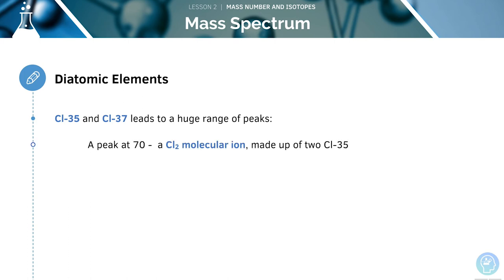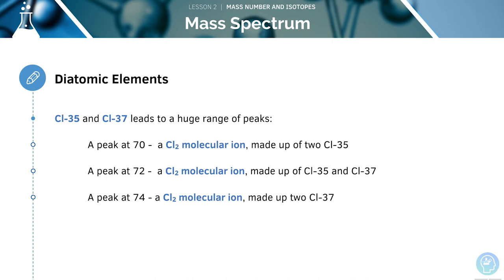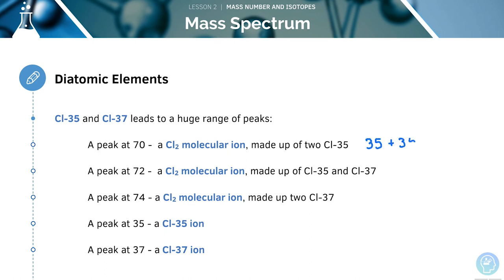Since chlorine has two isotopes, Cl-35 and Cl-37, this leads to a huge range of peaks. The peak at 70 is the chlorine molecular ion made up of two Cl-35s. The peak at 72 is made up of Cl-35 and Cl-37. The peak at 74 is made up of two Cl-37s. The peak at 35 is the Cl-35 ion, and the peak at 37 is the Cl-37 ion. You can work these out by simply adding the masses: 70 = 35 + 35, and 72 = 35 + 37.